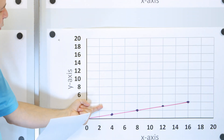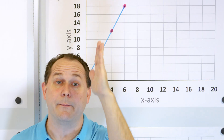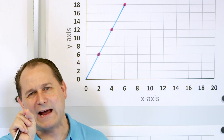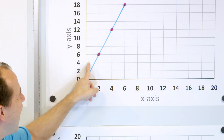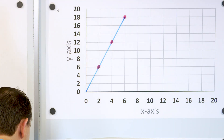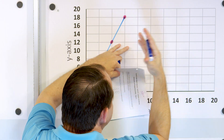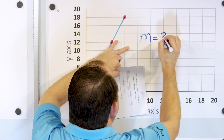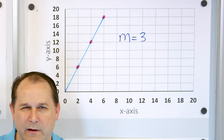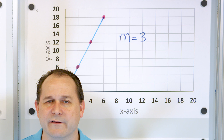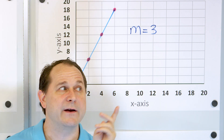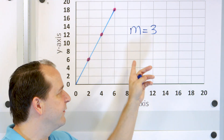The steeper line has the higher slope because it rises a very large amount compared to how far it moves horizontally — a very high rise compared to its run. So this is a very high slope, and the other line is a very low slope. The constant of proportionality for the steeper line was 3. We use the symbol M for slope, so M equals 3.